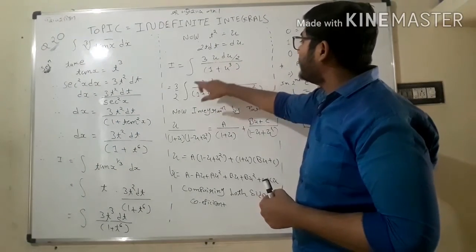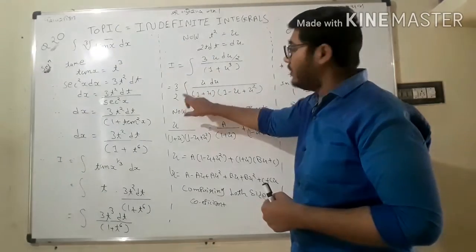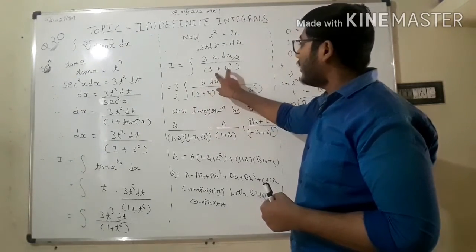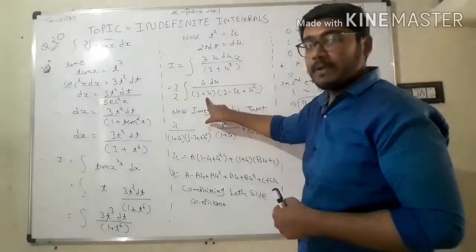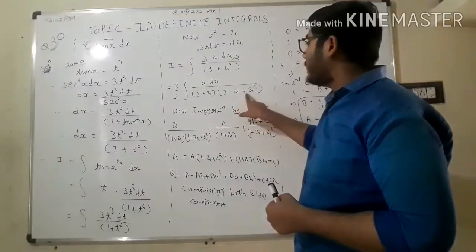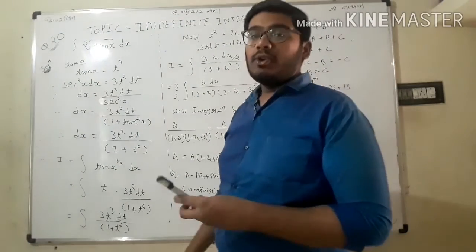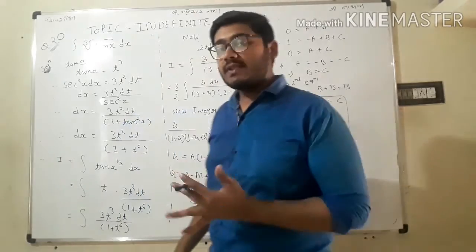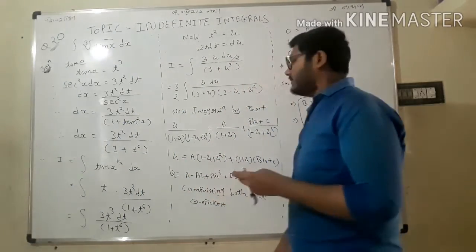The integral becomes 3/2 times u du upon 1 plus u³. The denominator 1 plus u³ factorizes as (1 plus u)(1 minus u plus u²). Now to go further we use partial fractions.